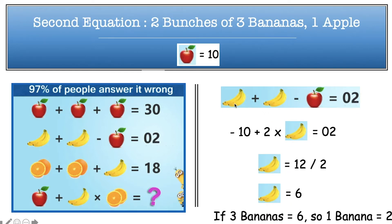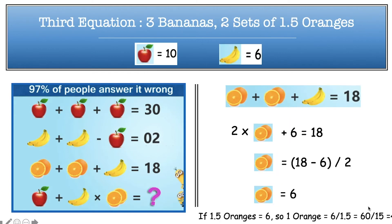Now jumping to our second equation. We have two bunches of three bananas minus one apple equal to 0. Putting the value of apple (10) into the equation: minus 10 plus 2 times a bunch of bananas equals 0, so a bunch of bananas equals 12 divided by 2, which is 6. Since each bunch has three bananas, three bananas equal 6, so one banana equals 2.